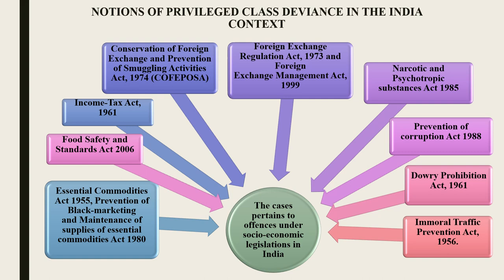The Prevention of Corruption Act 1988 is considered one of the worst socioeconomic crimes and the greatest impediment to progress for developing countries like India. An important step was enlarging the scope of the definition of 'public servant.' It is enacted to combat corruption in government agencies and the public sector in India, and discusses various offenses and penalties. The Dowry Prohibition Act 1961 prohibits the practice of giving or taking dowry by either party to a marriage. The law also punishes demanding and advertising dowry, and imposes a duty on the parties getting married to make a list of gifts and presents.